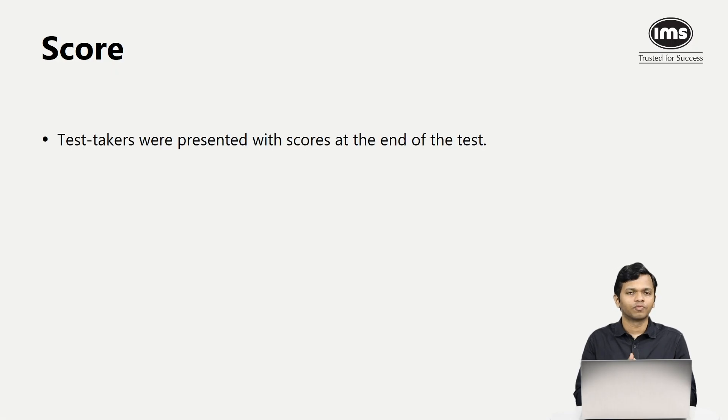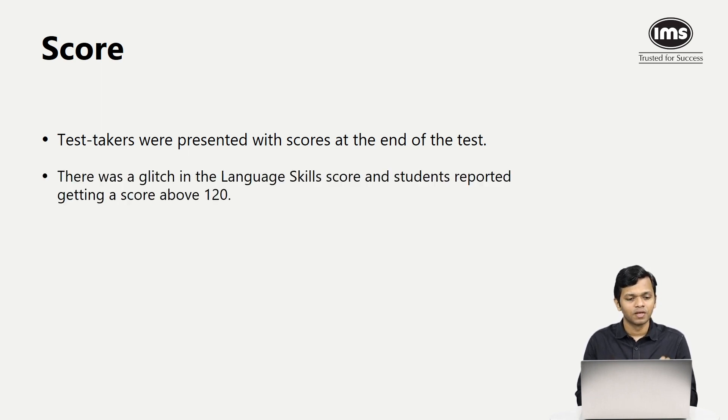Now let's talk about the score. Once you submit the test immediately on screen, you will be able to see your scale score. But of course there was a problem this time. There was a glitch in the language skills section because of which people saw scores which were more than 120. Quant score was fine, the LR score was fine, but suddenly in the language skills section, a lot of students saw scores above 120, which also translated into total score being above 360.